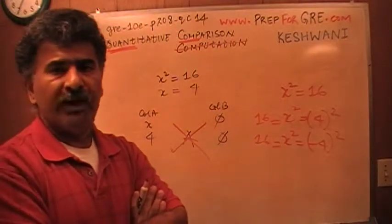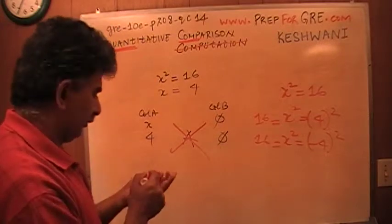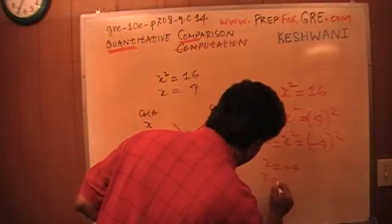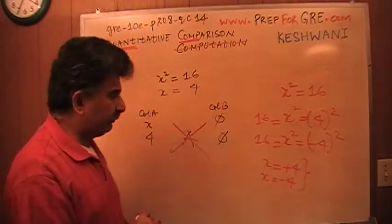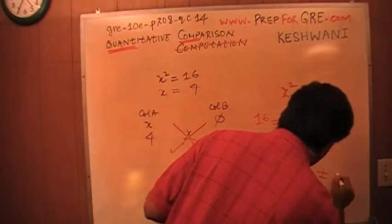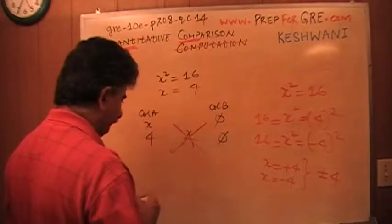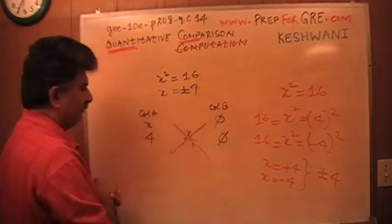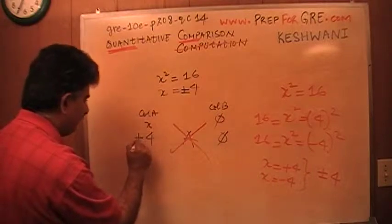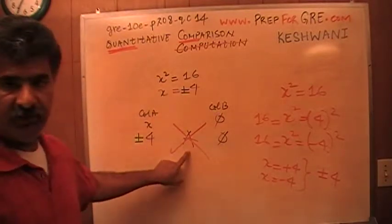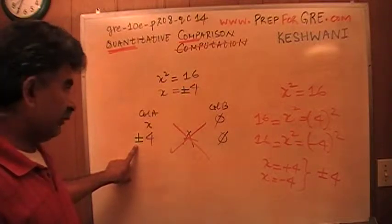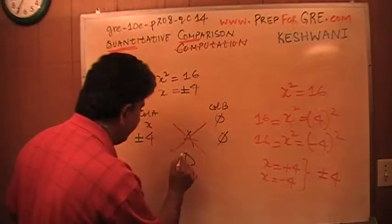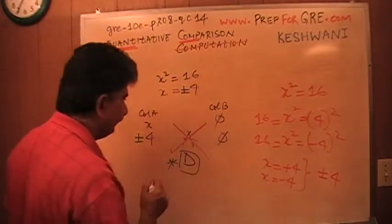There are two possible values for X. All I can say is that X could be positive 4 or negative 4, because both 4 squared and negative 4 squared equal 16. If X is positive 4, the answer would be A. If X is negative 4, the answer would be B. Since we do not know which it is, the correct answer is D.